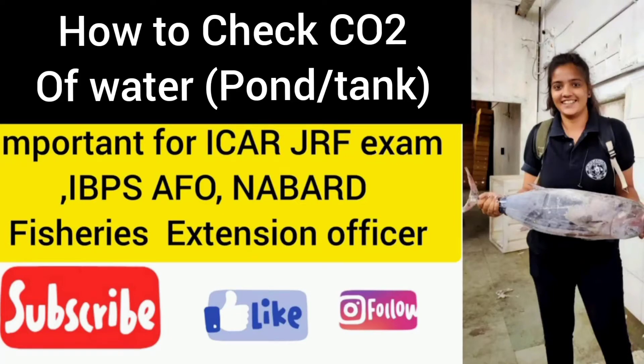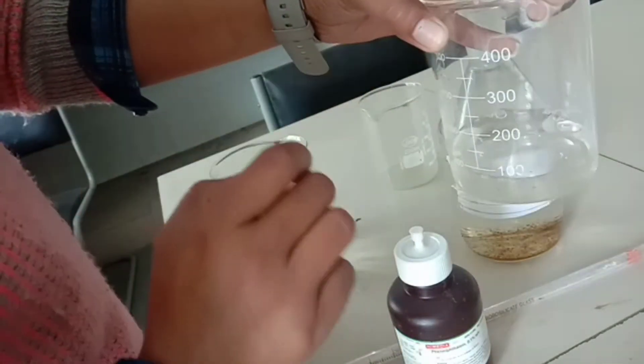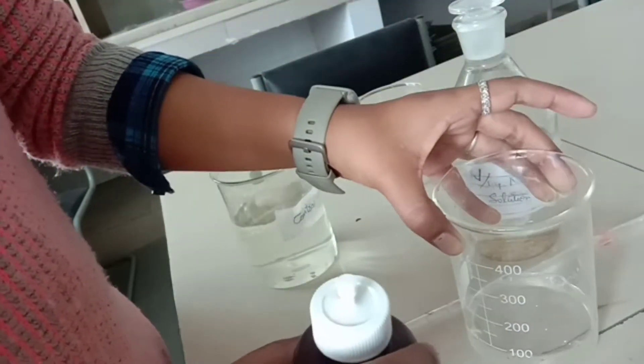Hi guys, welcome back to my channel. Today we will see how to check CO2 of a water from pond and tank. First, we will take 100 ml of sample water in a beaker.